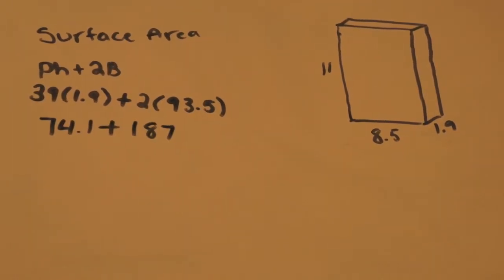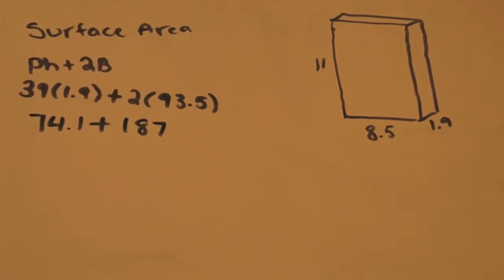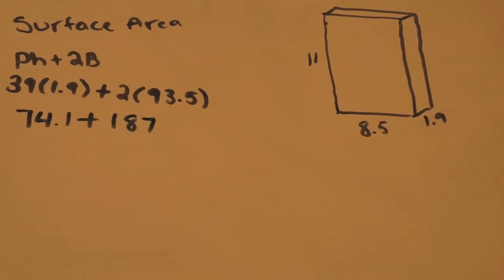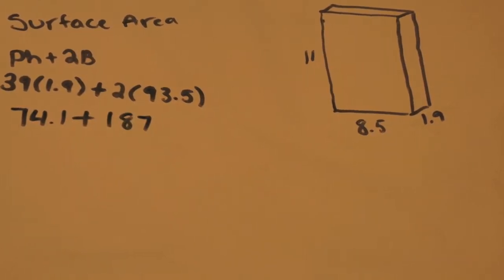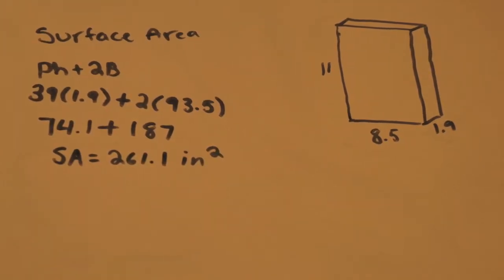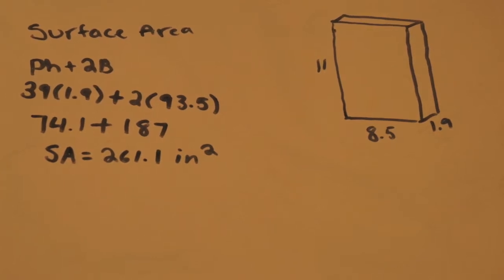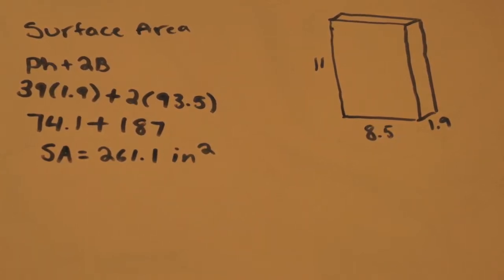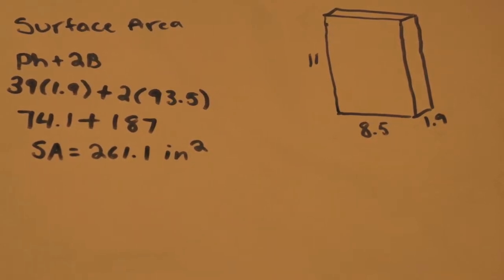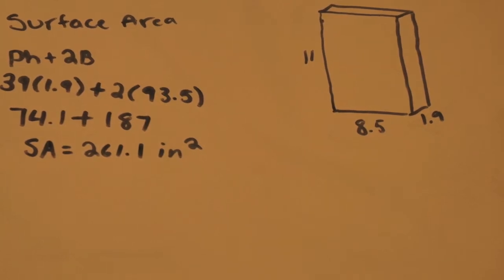When I use the order of operations to solve the problem I found out that 39 times 1.9 is 74.1 and I also found out that 93.5 times 2 is 187. When I add the two numbers together I get that the surface area is 261.1 inches squared, which is the exact amount of square inches of plastic covering it. I will call back the lady and tell her this information. I wonder why she needs to know this.